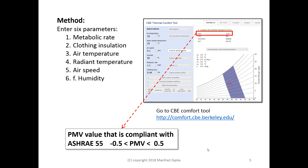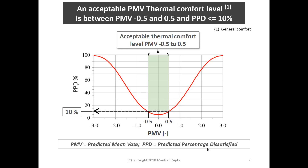The PMV is then used to calculate the PPD — Predicted Percentage of Dissatisfied occupants — meaning what percentage of occupants are dissatisfied with the thermal condition. We cannot have more than 10% dissatisfied. The PMV value must be between minus 0.5 and plus 0.5 in order to have a PPD value of 10% or less, and if we achieve this, we are compliant with ASHRAE 55.